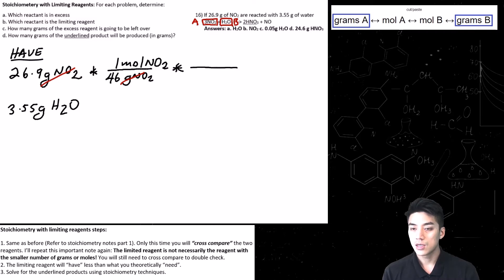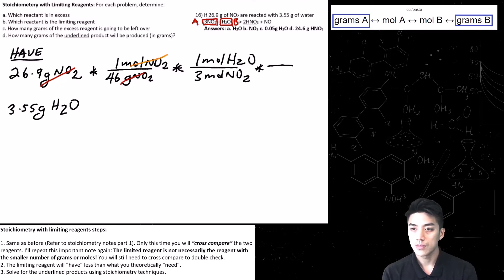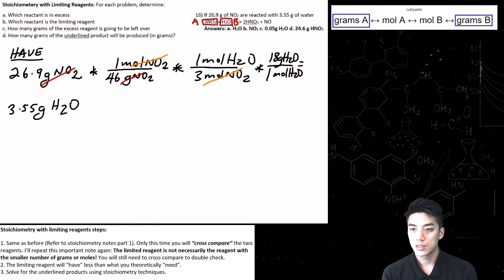Those units cancel out in red. The next step is cut and paste. Looking at the balanced equation, there are 3 moles of NO2 and 1 mole of water. So the moles of NO2 cancel out in orange. The last step is to get from moles of water into grams of water: 1 mole of water weighs 18 grams. So the calculation is 26.9 times 18, divided by 46 times 3, and we get 3.5 grams of water. We write the word 'need' above this.